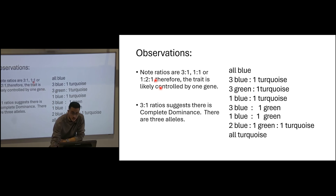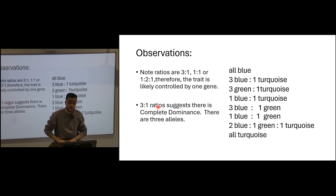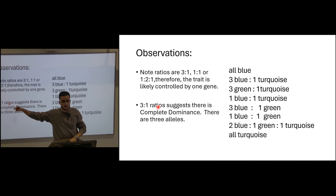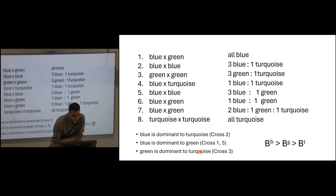The observations: because there's a 3 to 1 ratio, you can remove the idea of incomplete dominance because you have two phenotype categories only — typical of complete dominance. If it was incomplete dominance, you would get one blue, two turquoise, and one green. The gene B for color: the allele that gives blue is dominant to green, which is dominant to turquoise. Blue dominant to turquoise — cross 2. Blue dominant to green — crosses 1 and 5. Green dominant to turquoise — cross 3.